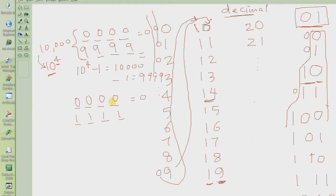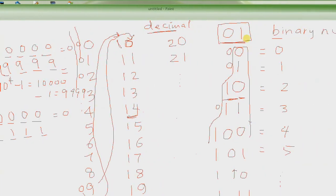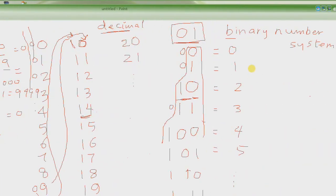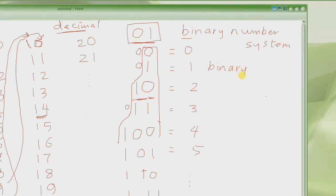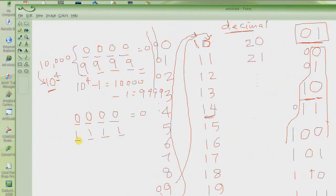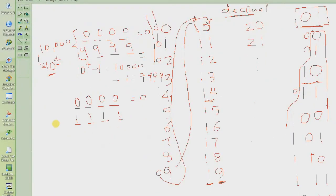Now, these digits — binary digits 0 and 1 — they are called binary digits, and in short they are called bits. Using bits, the maximum number that I can write is 1, 1, 1, 1.